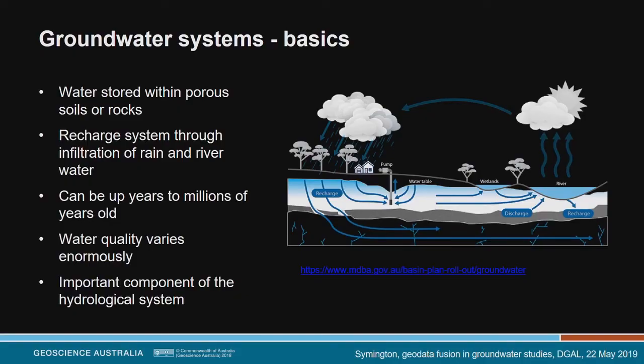Most importantly, groundwater systems are just a single part of the larger hydraulic system. Water falls as rain, enters the system and recharges it, might flow between aquifers, might flow back into wetlands or rivers where it evaporates back into the atmosphere and falls again as rain. So if you're going to understand and manage the water system, it's absolutely essential that you also characterise the groundwater system.